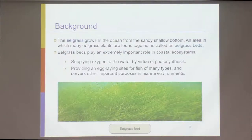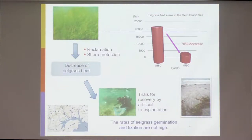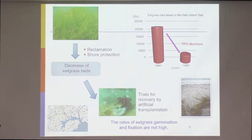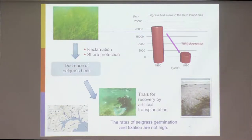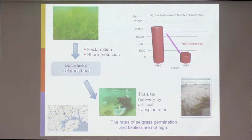Eel grass beds supply oxygen to the water through photosynthesis and provide egg-laying sites for many types of fish. In recent years, due to reclamation and shore protection works, eel grass beds have been constantly decreasing — for example, over 30 years they decreased by 70 percent in some areas. There are several trials for recovery by artificial transplantation, but the germination and fixation rate is not very high — only 10 to 20 percent of transplanted plants succeed, and another 80 percent are swept out.